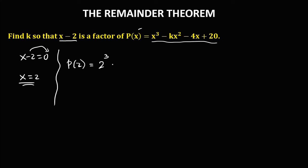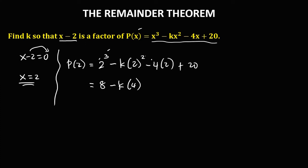With x equal to 2, we have 2 to the power 3, minus k times 2 to the power 2, minus 4 times 2, plus 20. Simplifying: 2 to the power 3 is 8, 2 to the power 2 is 4, and negative 4 times 2 is negative 8. So combining like terms: positive 8 minus 8 is 0, leaving us with negative 4k plus 20.